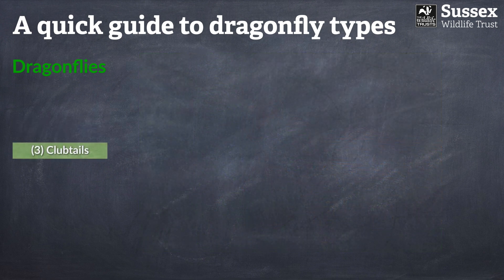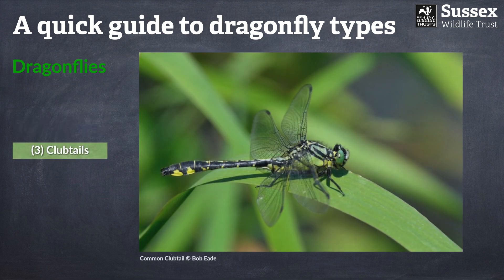The next group are the club tails — though really it should be 'club tail' singular, because there is in fact only one species in this group: the rather magnificent common club tail, as pictured here. I'm sure I don't need to explain why this dragonfly is known as the club tail.